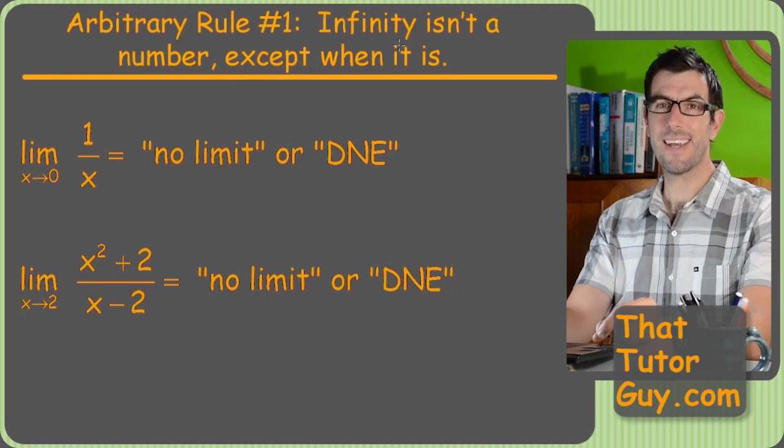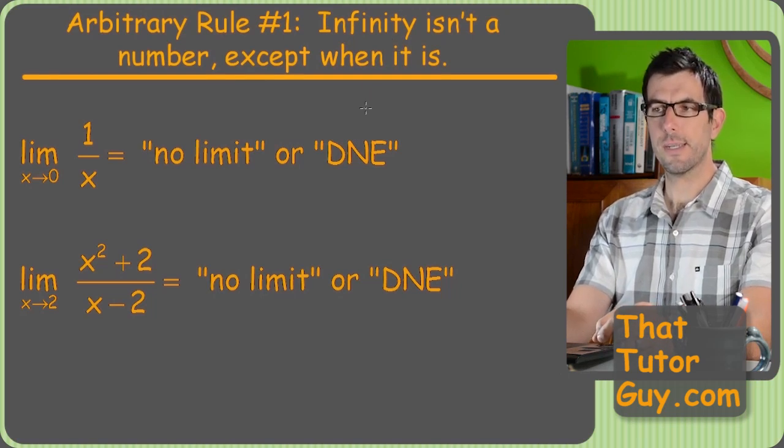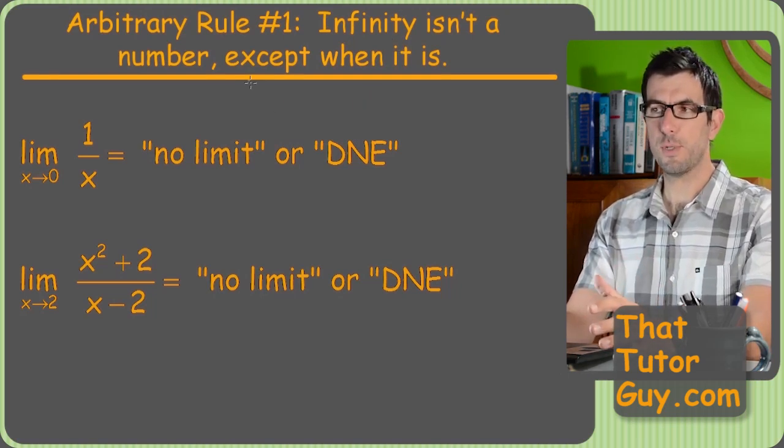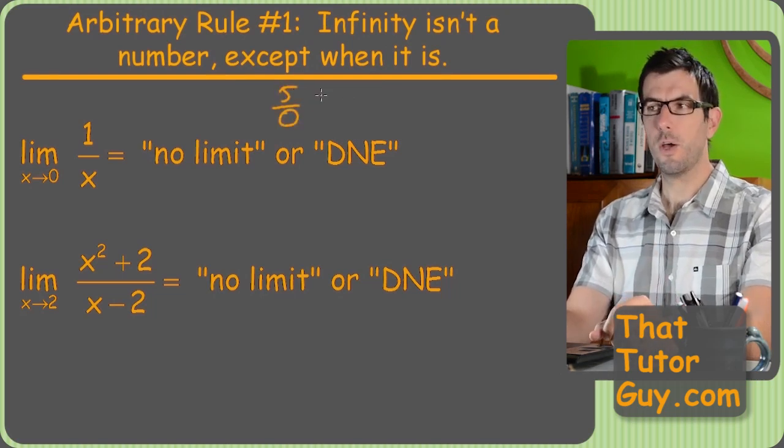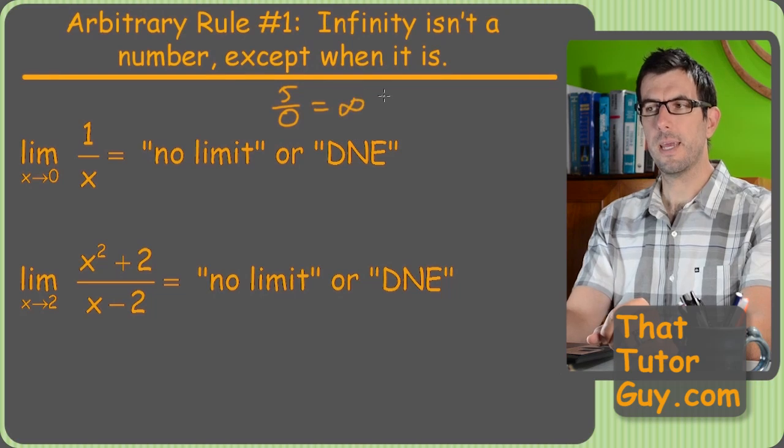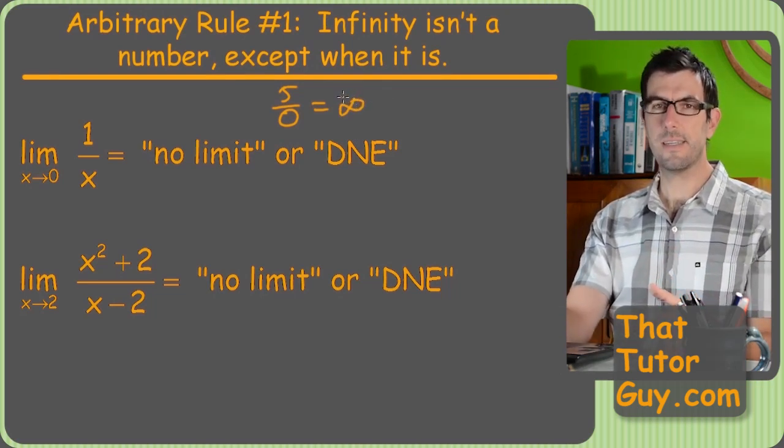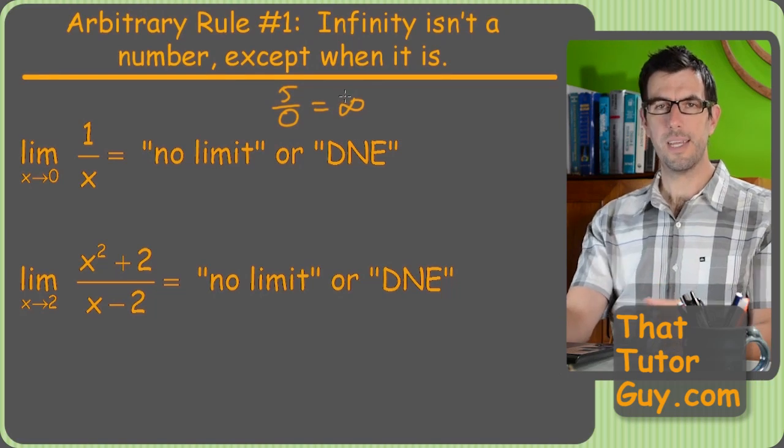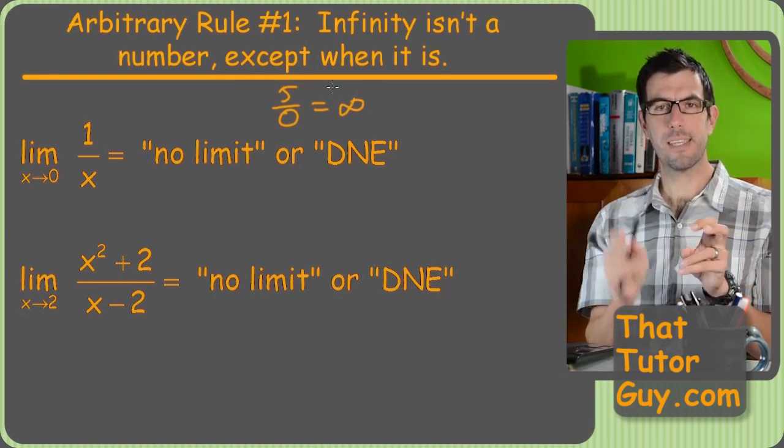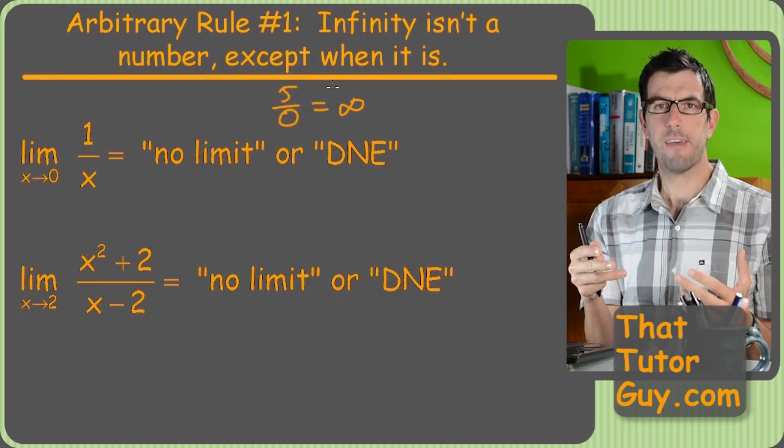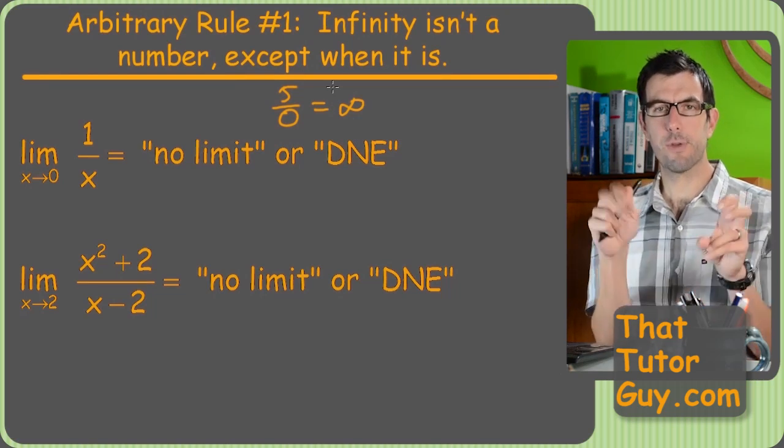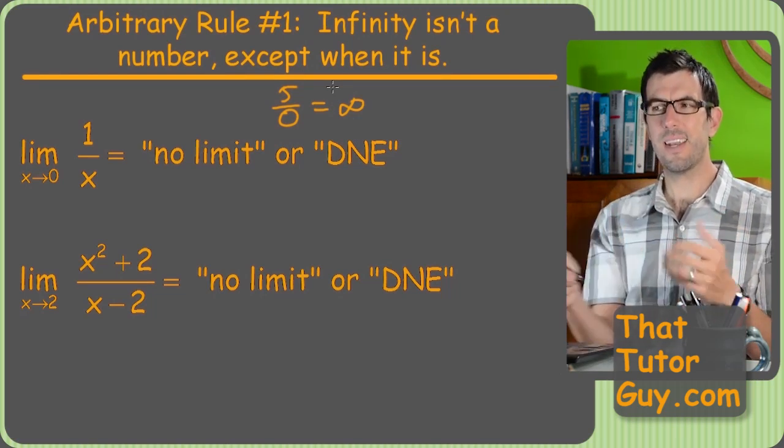So rule number one: infinity is not a number. So a lot of times I get this question from students all the time. They'll say, well hey, five over zero, why is that undefined? Why isn't it just infinity? And the reason is because infinity kind of isn't a number. So infinity is the idea of a number that's getting bigger super fast and will never end, and they call that increasing without bound. But the point is it's not a number.